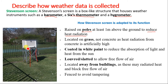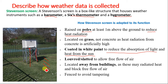It is also coated in white paint, not black, to reduce absorption of light and heat from the sun. It has a louvre — slated in format, not fully covered — to allow free flow of air inside the Stevenson Screen. It is located away from buildings, as these may radiate heat and block free flow of air. It is fenced to reduce tampering from animals and individuals, and it is not placed under a tree, as a tree would form shade and affect the data.